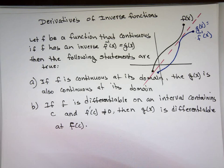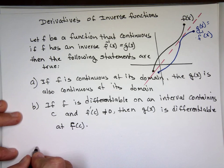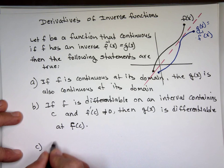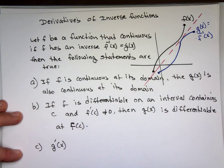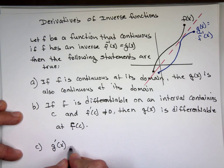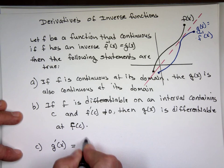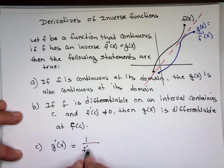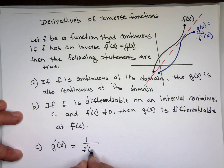And if you want to find the derivative of the inverse function — that's where we're going with this — the derivative of the inverse function is 1 over the derivative of f at g sub x.